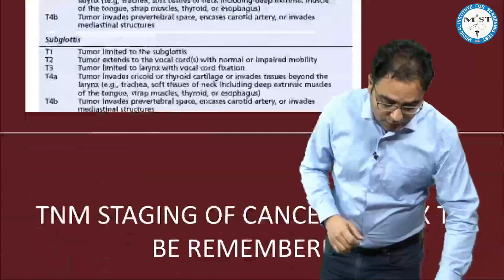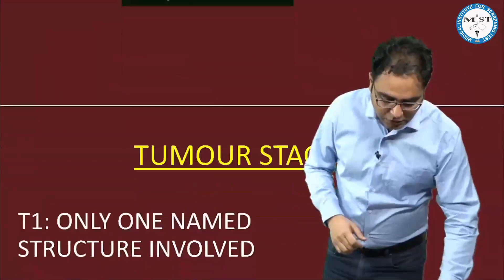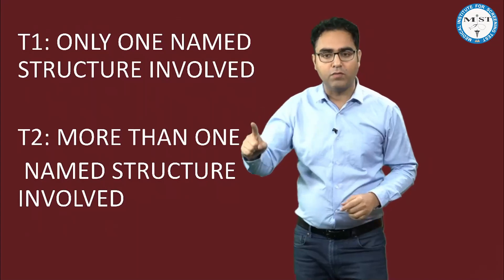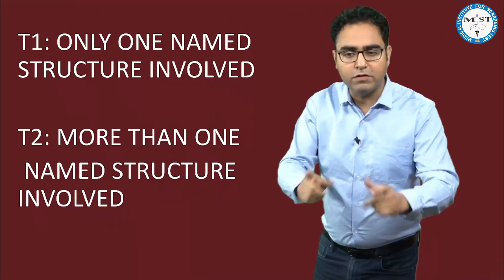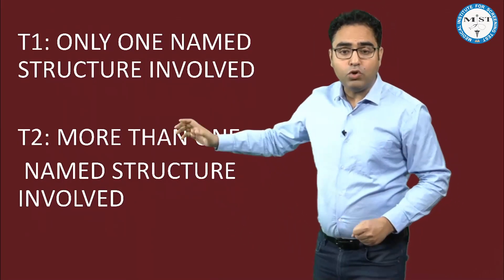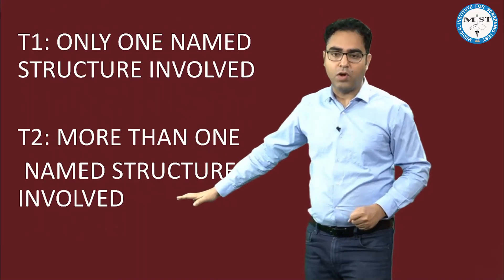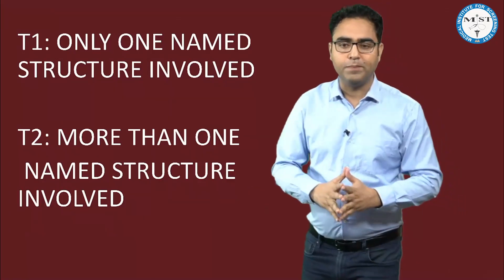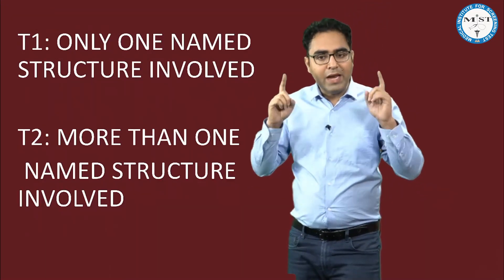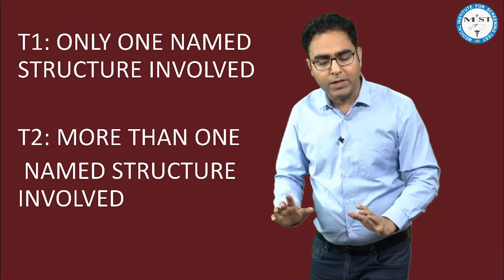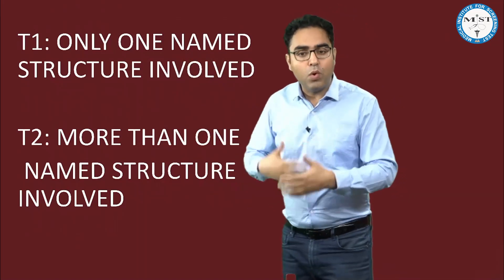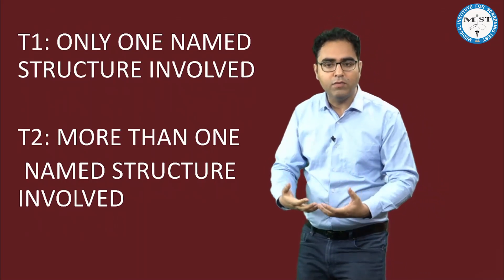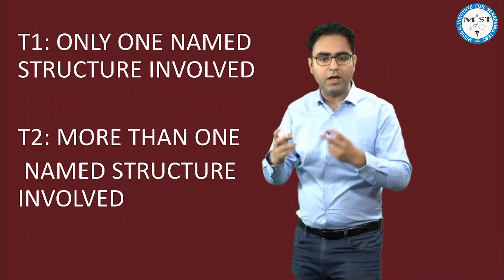Now the first one — T1 tumor staging. What is T1? T1 means only one structure involved. Tumor involving epiglottis is T1. T2 means more than one named structure involved. Tumor involving epiglottis plus aryepiglottic fold is T2. Please understand: when one named structure is mentioned, involvement is T1; but when more than one named structure is involved — like tumor involving epiglottis and the false vocal cord — two different names — that is T2.